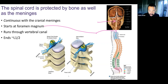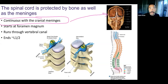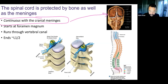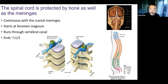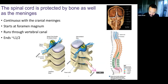Given that the spinal cord is continuous with the brain, it's also continuous with the meninges: the dura mater, arachnoid mater, and pia mater. That's all continuous along the spinal cord. Here's another rotated view — a posterior view — where you can see the spinous process and the spinal cord protected by the vertebral canal.